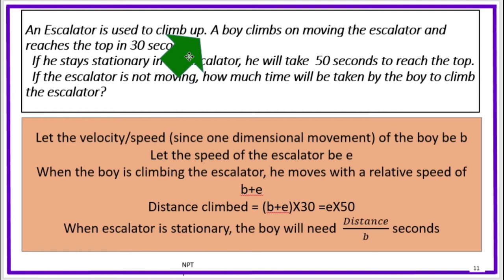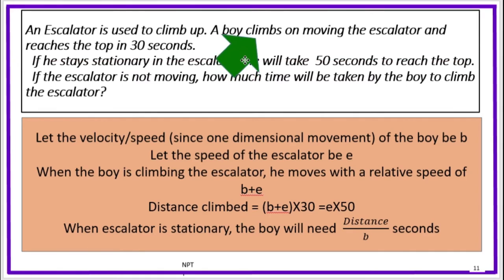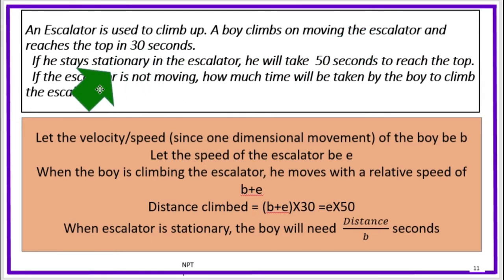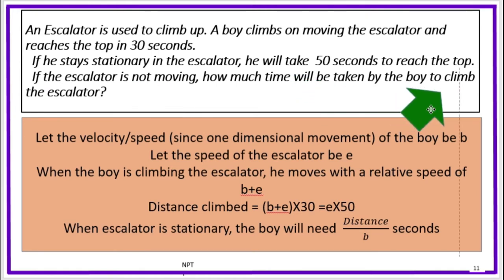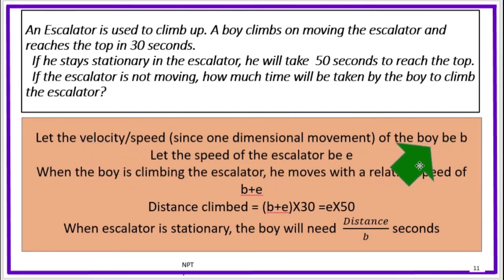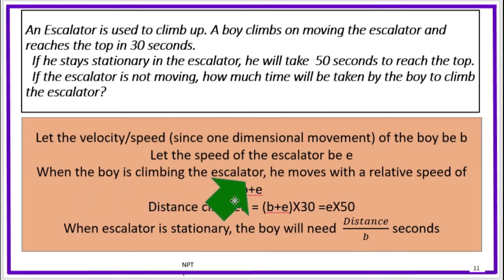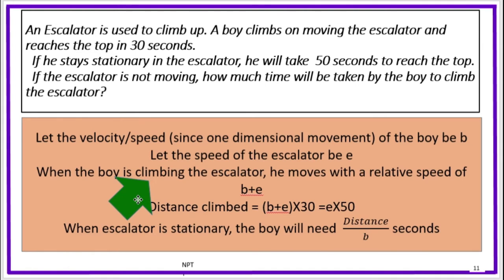Now consider an escalator moving at an airport or railway station at a particular speed. The escalator is moving from the bottom. When the escalator is stationary, and when the boy is climbing the escalator when it is moving, he moves with a relative speed of b plus e, where b is the boy's speed and e is the escalator speed. So when the escalator moves, the boy climbs with relative velocity b plus e.